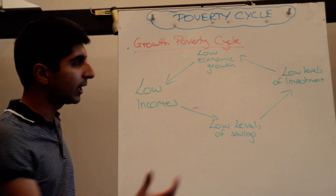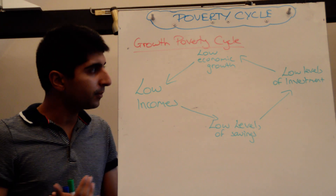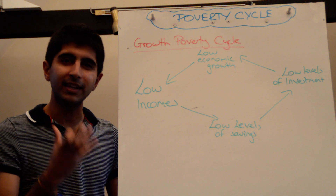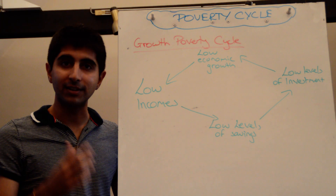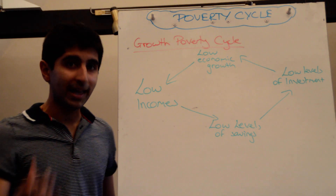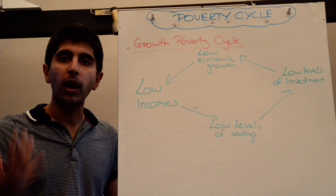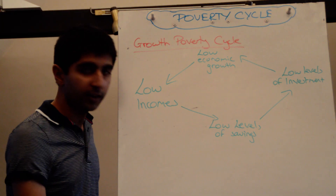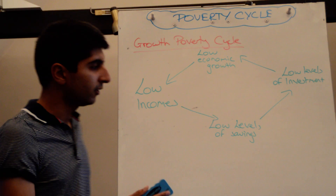Without much saving in the economy, there can't be much investment taking place. And without much investment taking place, that's going to mean that economic growth is limited, because investment is a key driver of growth — it's a key part of the aggregate demand equation. So you cut off investment, you cut off actual and potential growth. And if there is no growth, that's going to lead to more and more problems in terms of lower incomes. That's the growth poverty cycle — how low incomes can perpetuate and come back to low incomes again.